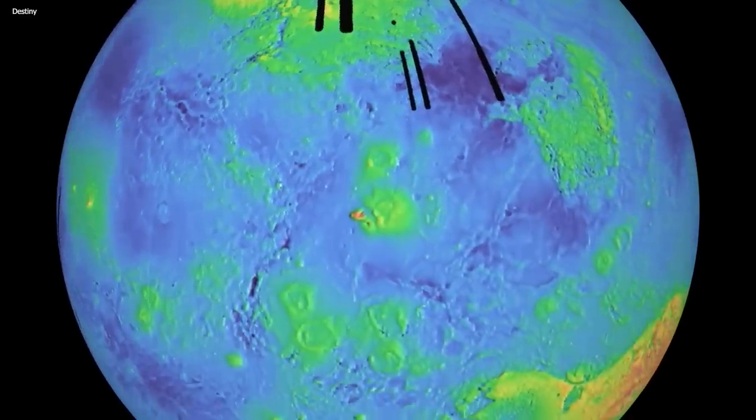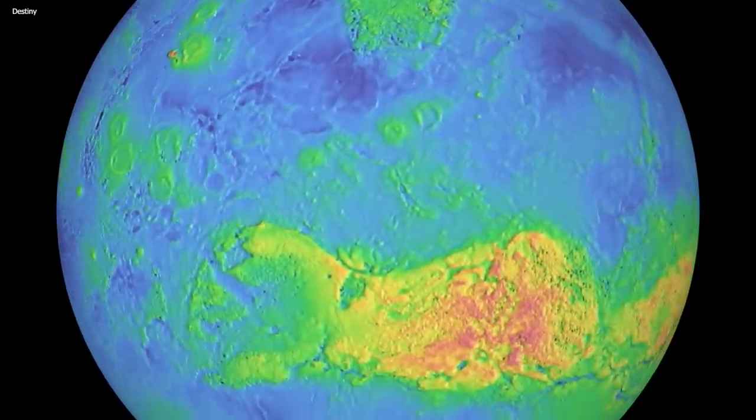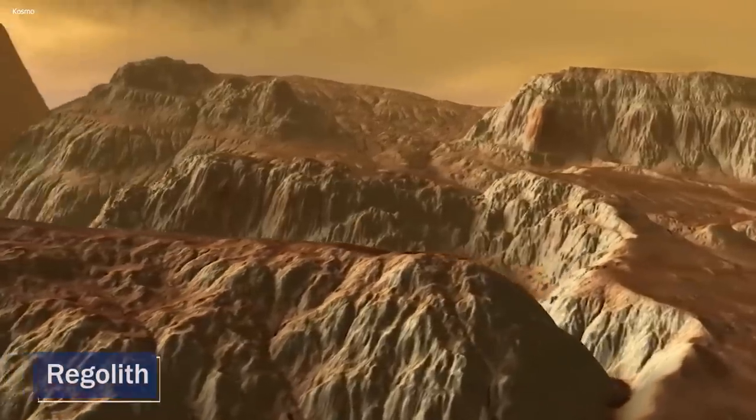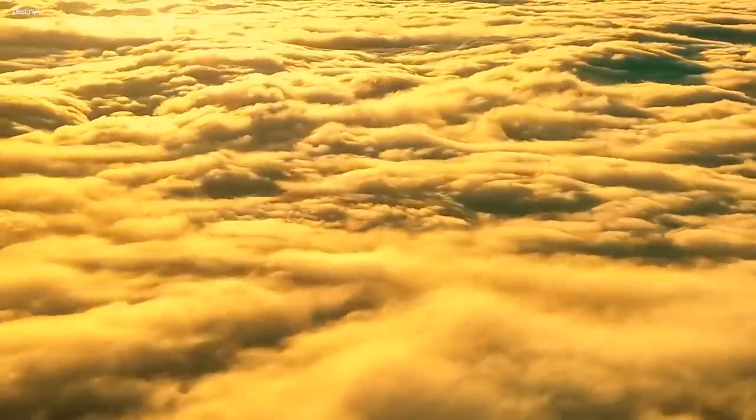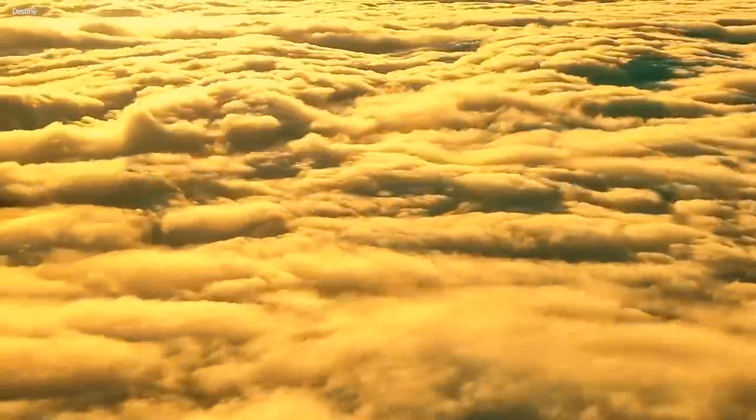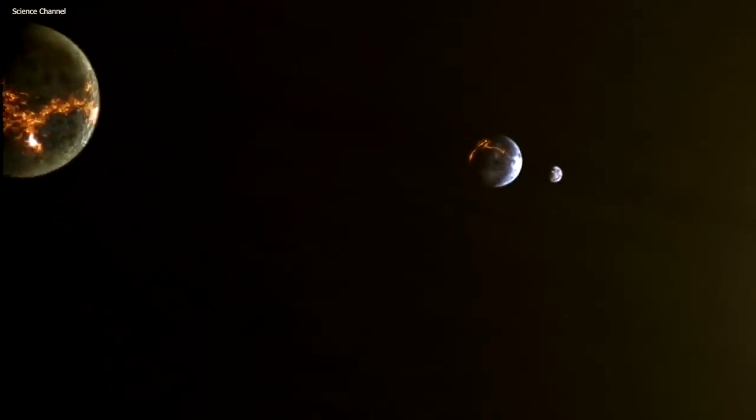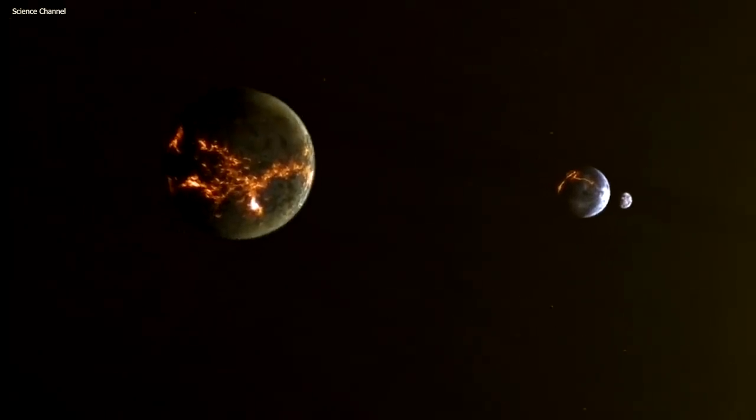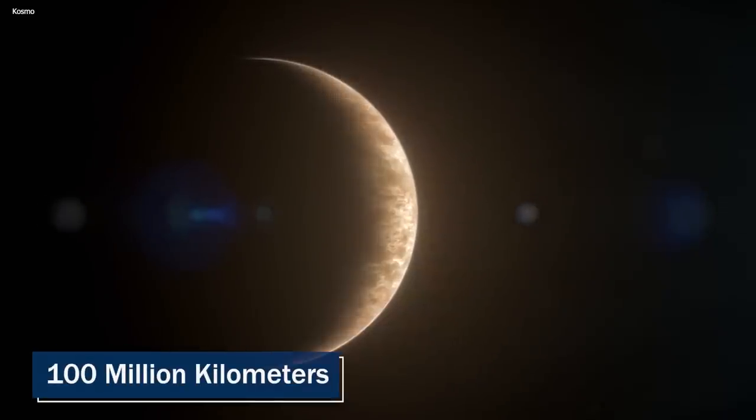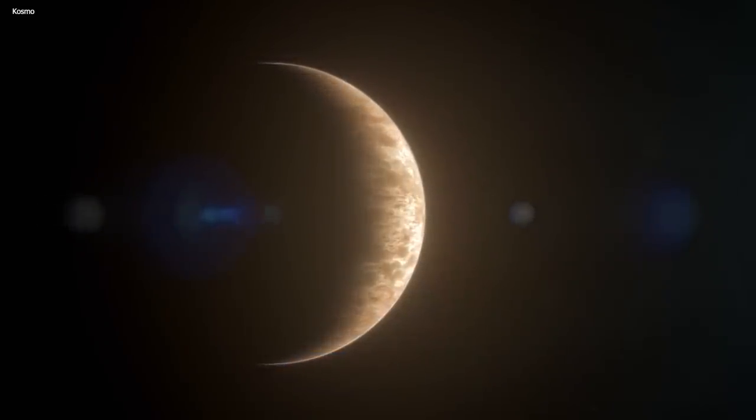But that's not all, folks. Venera 13 also did some digging and analyzed a sample of Venus's soil, or regolith. This analysis provided us with valuable insights into the planet's composition and geology, including the presence of materials like titanium and iron. It's incredible to think that we were able to learn so much about a planet over 100 million kilometers away from us. That, too, in the 1980s.